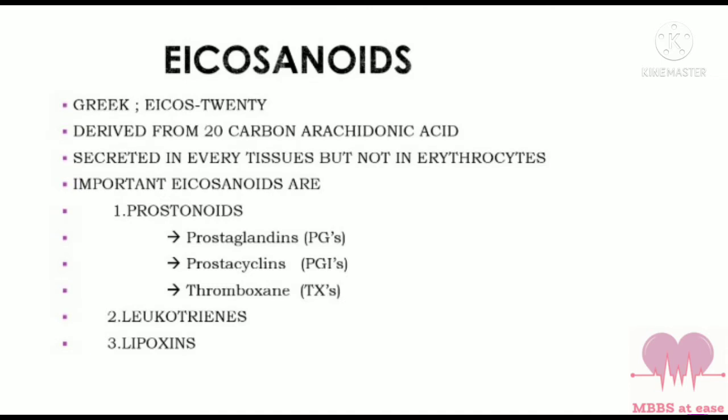Eicosanoids are secreted in every tissue but not in erythrocytes. Important eicosanoids are prostanoids, leukotrienes, and lipoxins. In prostanoids we have prostaglandins, prostacyclins, and thromboxanes. First let us learn about prostaglandins, and we will also learn about prostacyclins and thromboxanes.